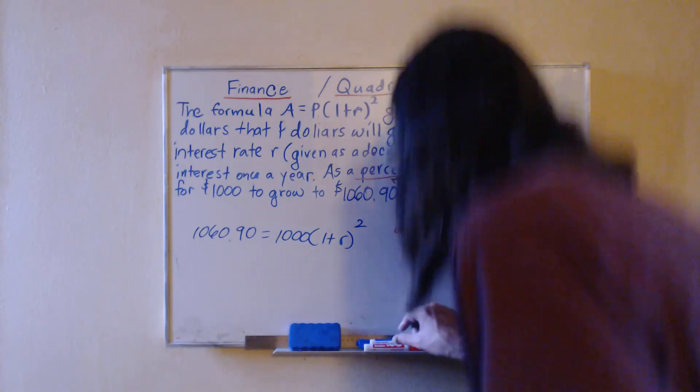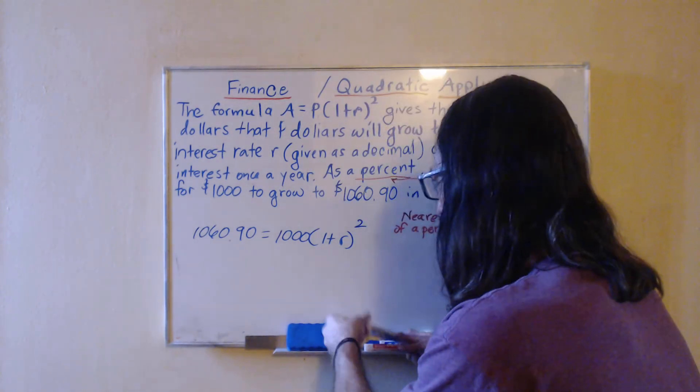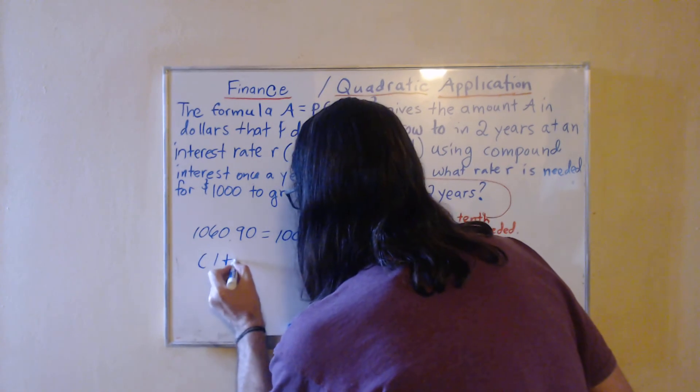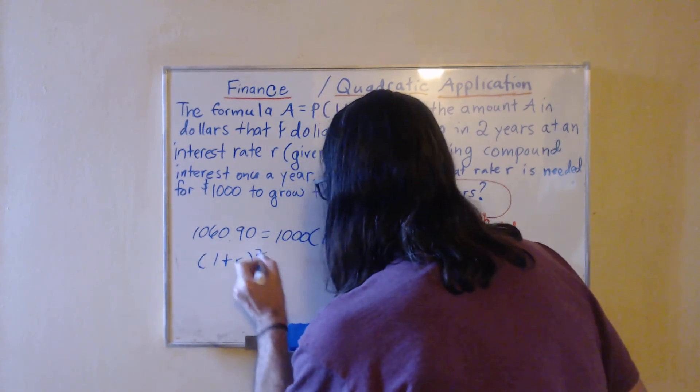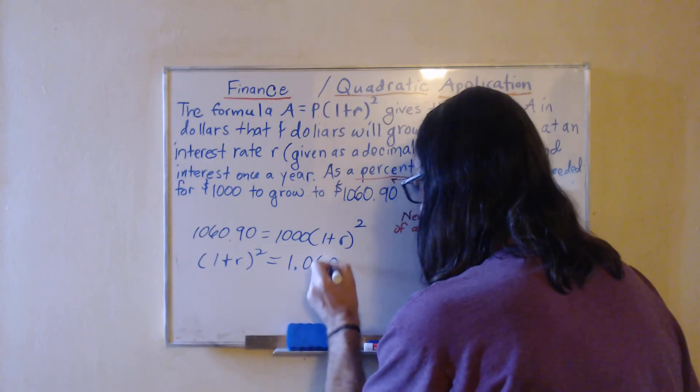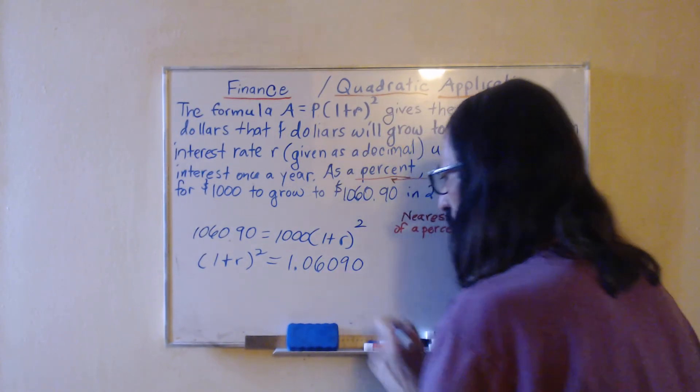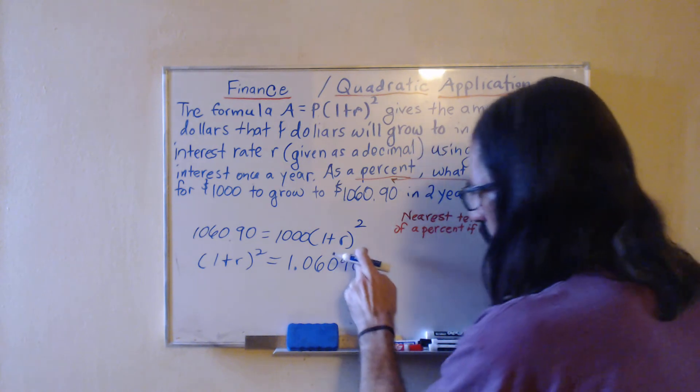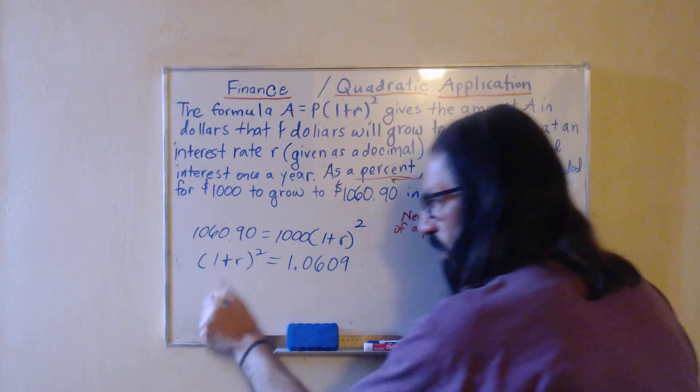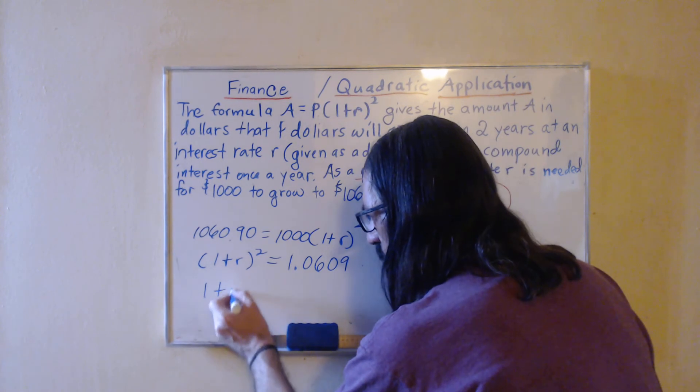So I'm going to divide both sides by 1000. That isolates the part that is squared. It's going to move the decimal point three to the left, that last zero we won't need to see. Taking the square root of both sides, it cancels on the left.